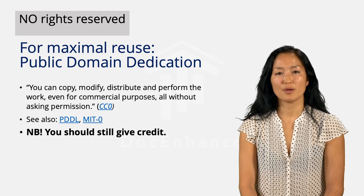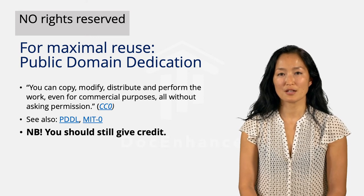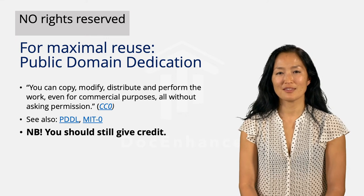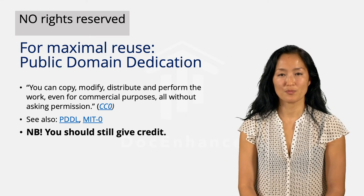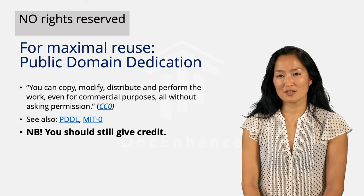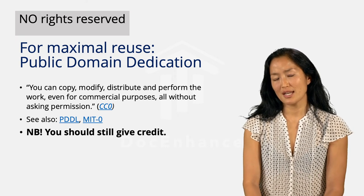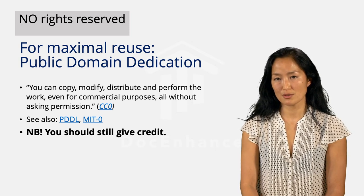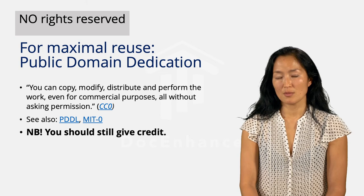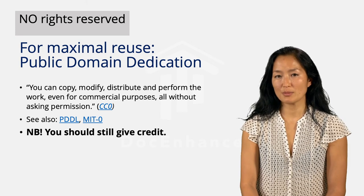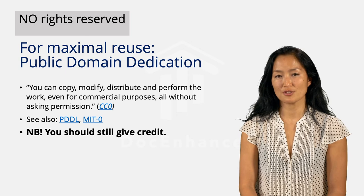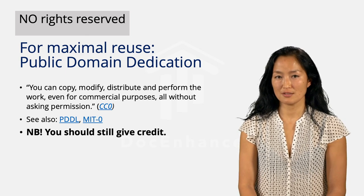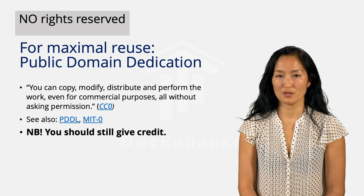There are other public domain dedication tools such as the Open Data Commons Public Domain Dedication and License (PDDL) and the MIT No Attribution License (MIT0). Because public domain dedication tools do not contain any restrictions, they are recommended for research data to encourage maximal reuse. Note that even though public domain dedication tools do not require that users give attribution, there is still an ethical obligation to give credit, in accordance with disciplinary norms and type of reuse.